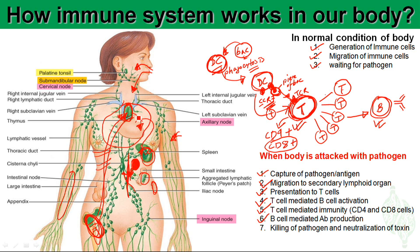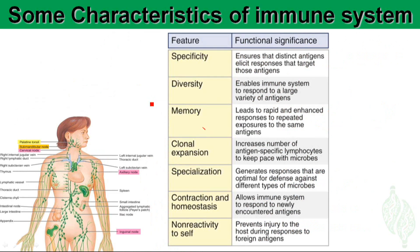Those T cells travel through the circulation, enter the lung, and kill the bacteria and viruses. Meanwhile, the B cells produce antibodies that are released into the serum; through the circulation those antibodies also go to the lung and neutralize the bacteria or bacterial toxins. This is the overview of the total immune system — how it responds when a foreign pathogen tries to invade the body.